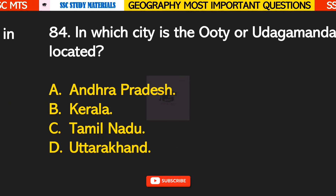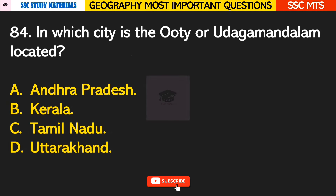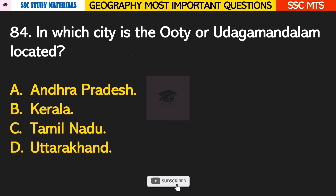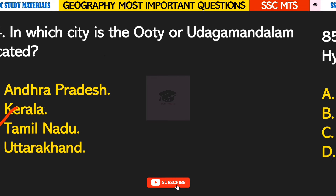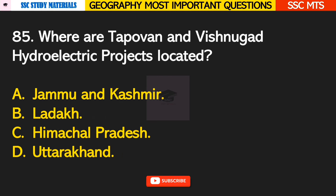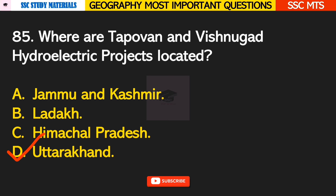Question number 84: in which city is Ooty or Udhagamandalam located? Answer C — it is located in Tamil Nadu. Question number 85: where are Tapovan and Vishnugad hydroelectric projects located? Answer D — they are located in Uttarakhand.